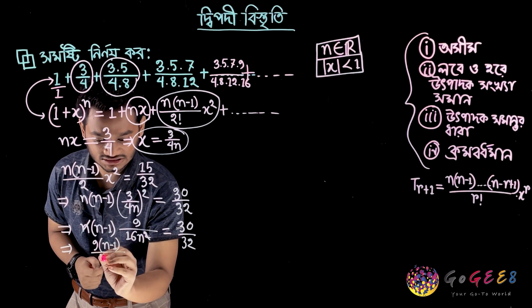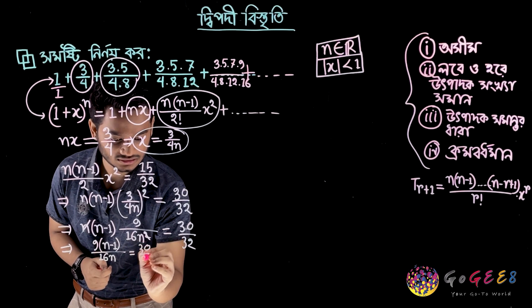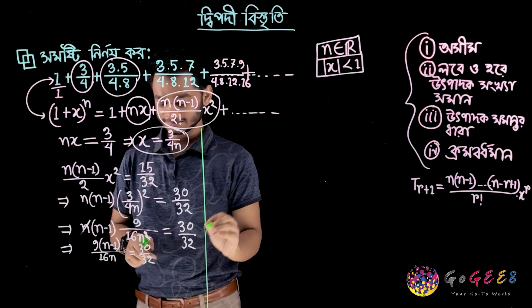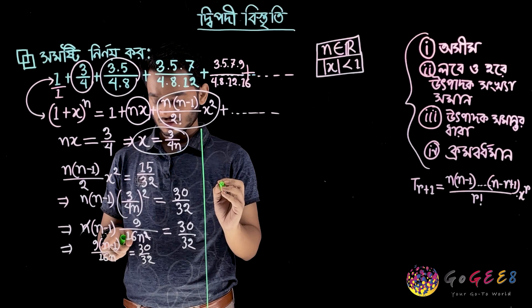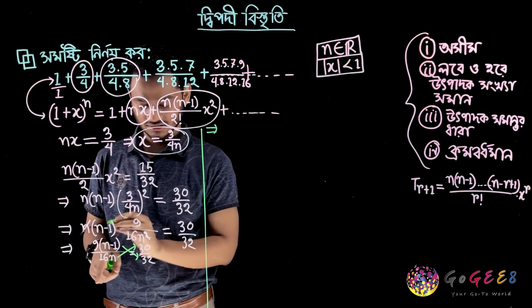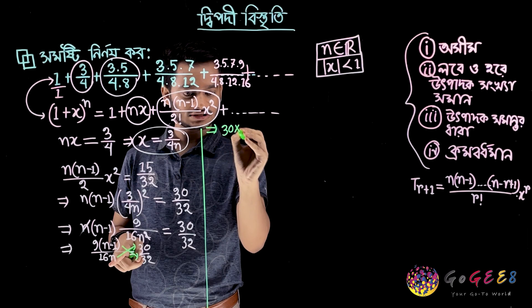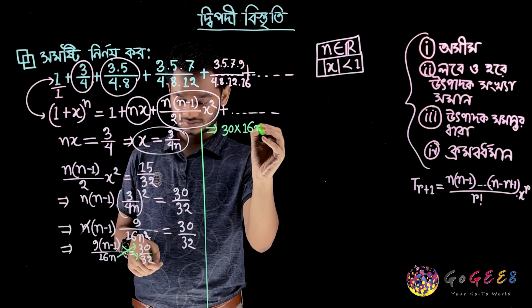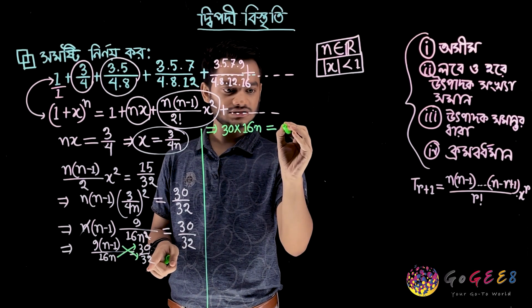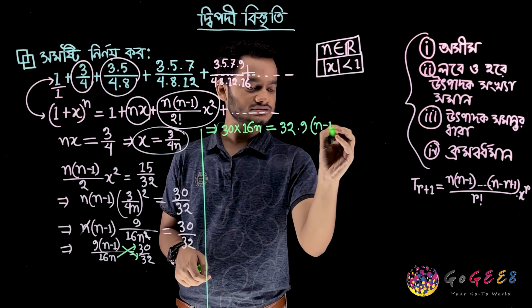We are 16N. 30 by 32. So we will try to get a calculation. This is the calculation. We will try to keep the calculation. Equals to 32 and 9 into n minus 1.